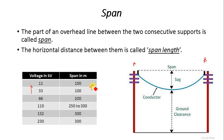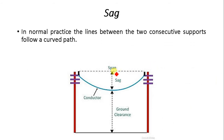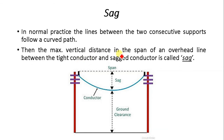Now before going to the second definition, when a conductor is placed, it will always have some kind of sag. When the conductor is placed in a straight line passing through the top points of the supports, it is called a tight conductor. But in normal practice, the line between two consecutive supports follows a curved path. The maximum vertical distance in the span of an overhead line between the tight conductor and the sag conductor is generally called sag.